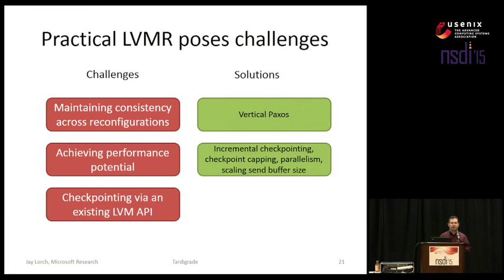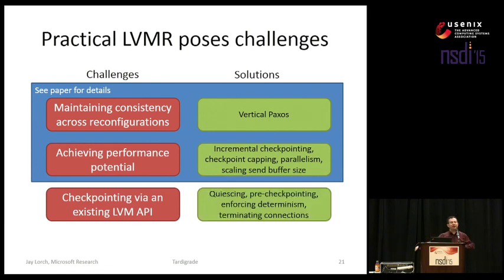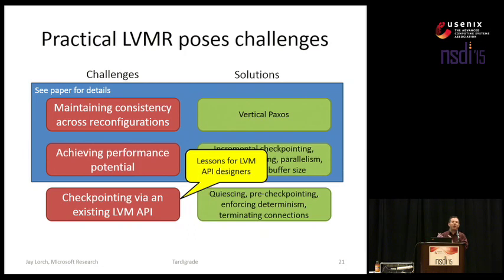What I'm going to spend my limited time here talking about is the last challenge — checkpointing via interposition on an existing LVM API — and the solutions we have for that. These will be of interest to you if you want to go out and build replication for your favorite LVM, or even if you're just an API designer who wants to know how to make your APIs amenable to checkpointing and therefore migration and replication.